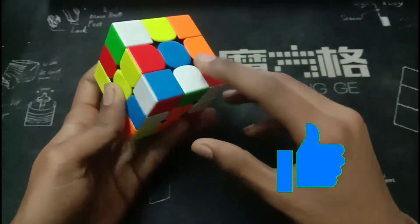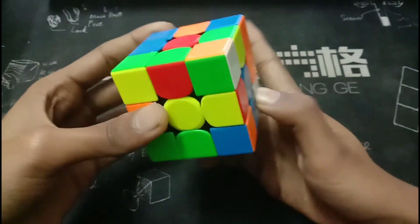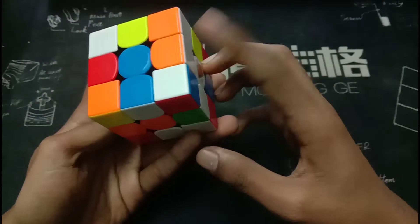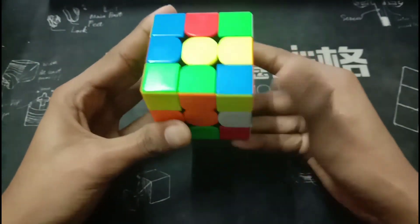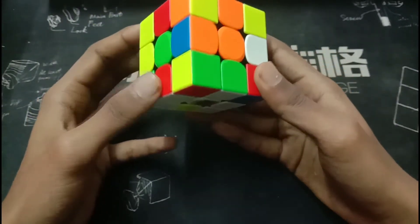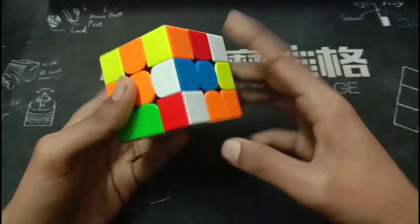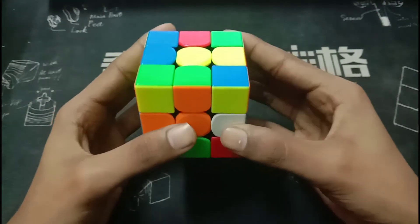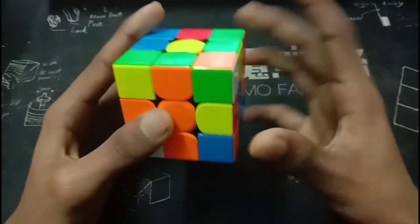Now because this is in the D layer, he is able to insert that also quickly. So these two are now relatively inserted. Now he does a wide R so that the white cross is on the bottom and this one is also inserted by that. And now because these three are relatively solved, he can insert the last one here.